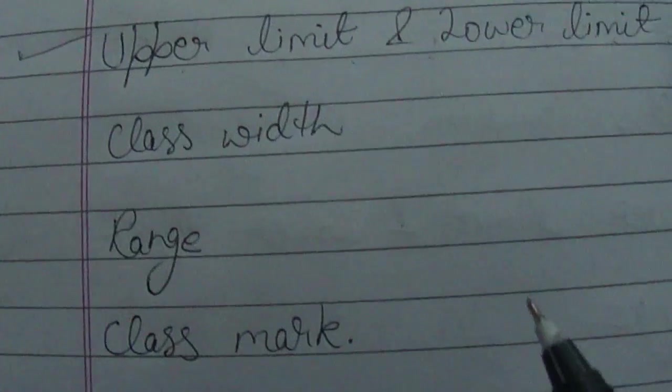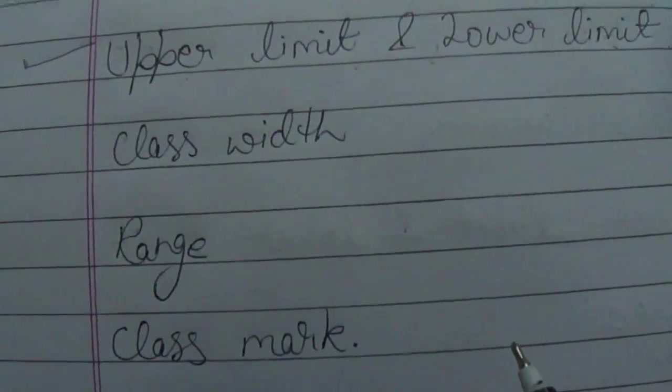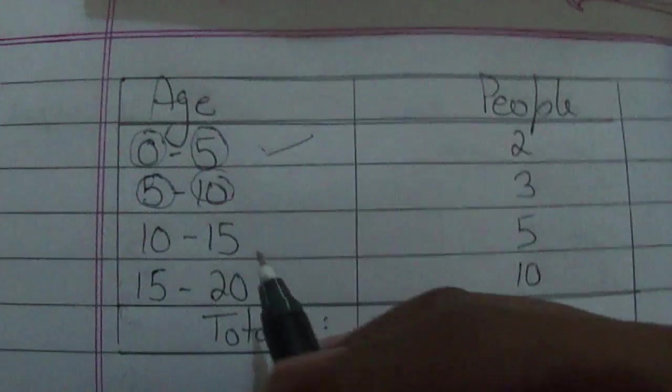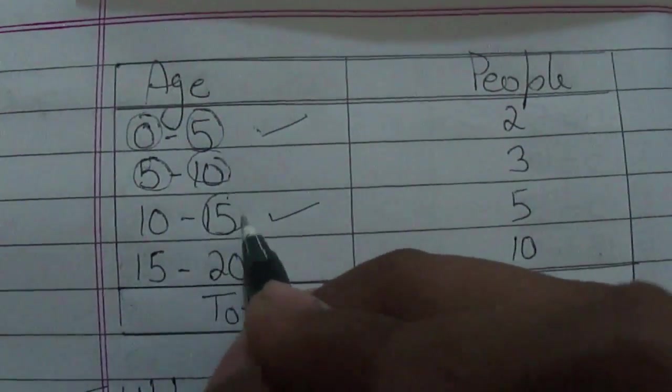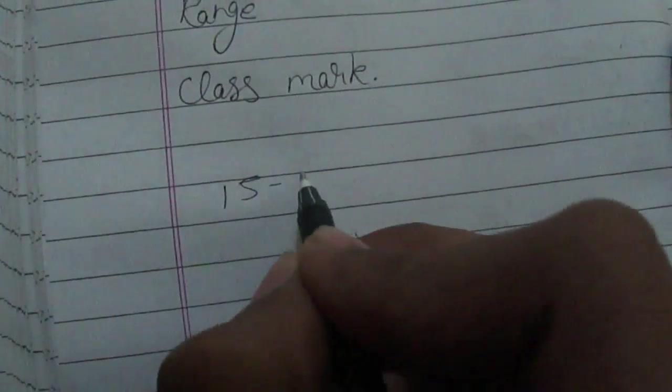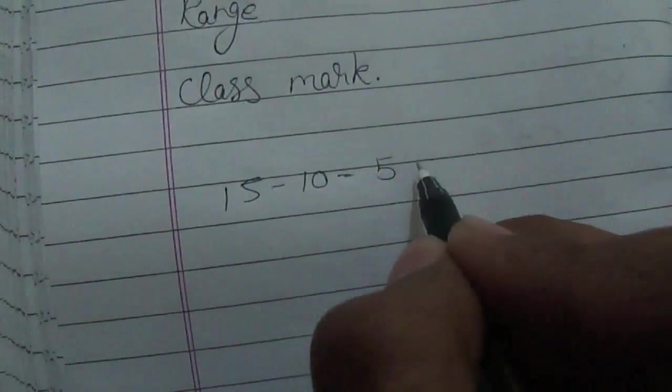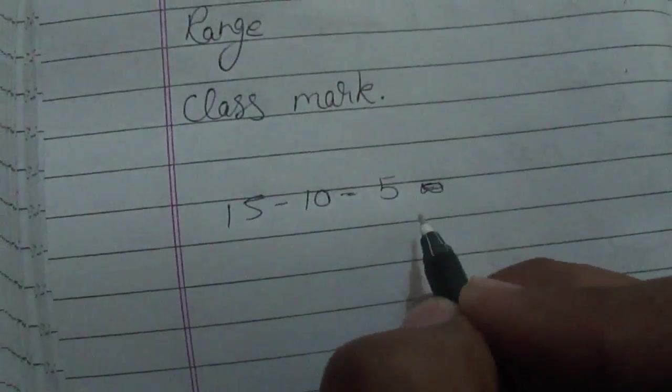Now, what do we mean by class width? When we talk about any class and its width, it means upper limit minus lower limit. Hence, 15 minus 10 equals 5, which is its class width.